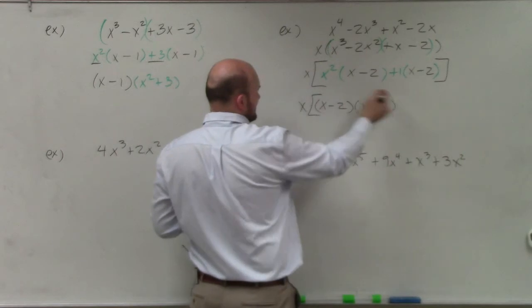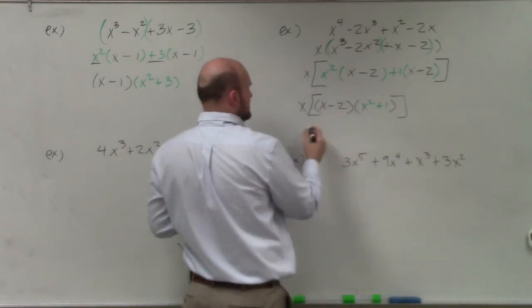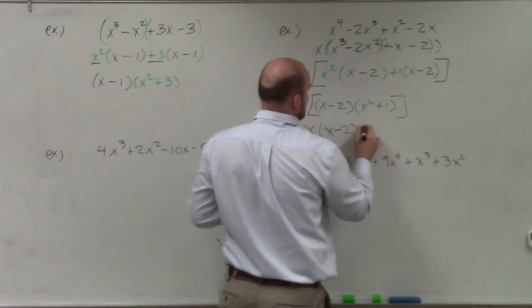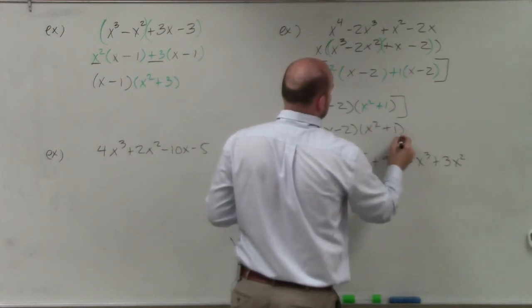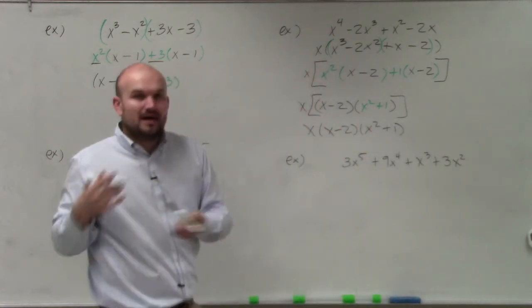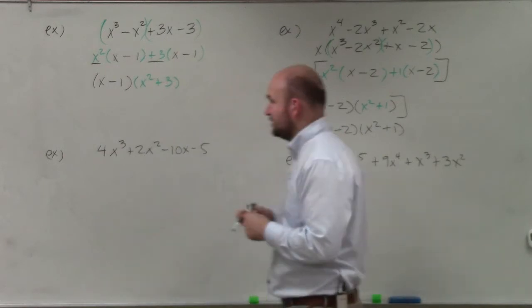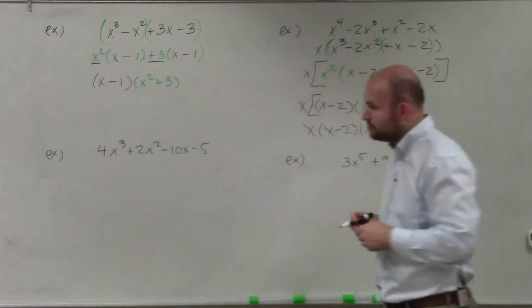And I don't really need to write the parentheses in there. I can just write it as x times x minus 2 times x² plus 1. Because now that's written as product form, the commutative property will apply. So I'm no longer having to use distributive property or so forth.